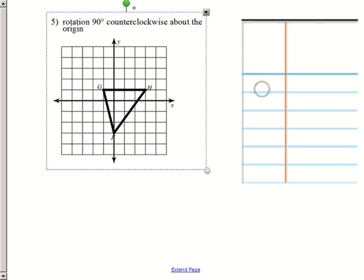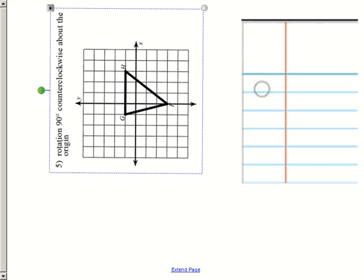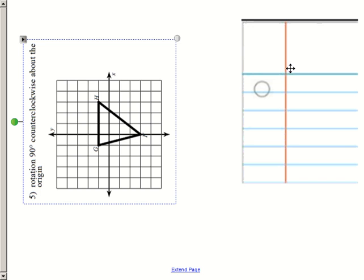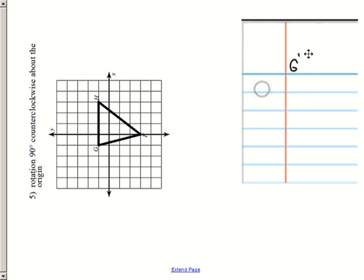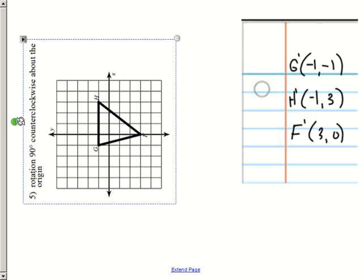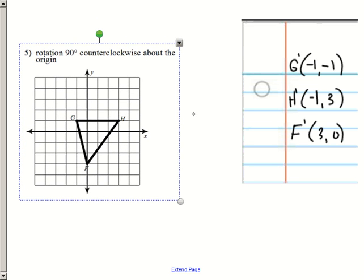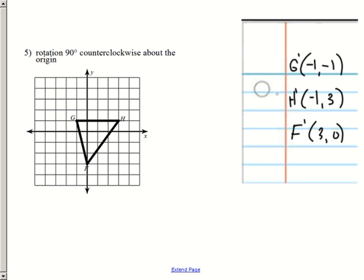90 degrees counterclockwise, so we need to flip it backwards. To the left, one quarter of a turn. Let's see, it looks like that's at negative one, negative one. This one would be at negative one, three. That would be the H. Looks like it's going to kind of get a little messy in here again. Negative one, negative one. Right here. Go ahead and call that G prime.